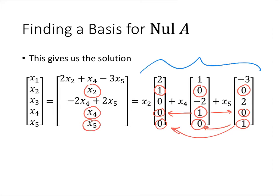That means the vectors we get must be linearly independent, because if we take any linear combination of all but one of those vectors, those vectors will have zeros in common in one position. That linear combination would never equal the remaining vector, because that vector has a 1 in the position where all the other vectors have zeros. So this process for finding a spanning set for the null space actually gives us a basis.